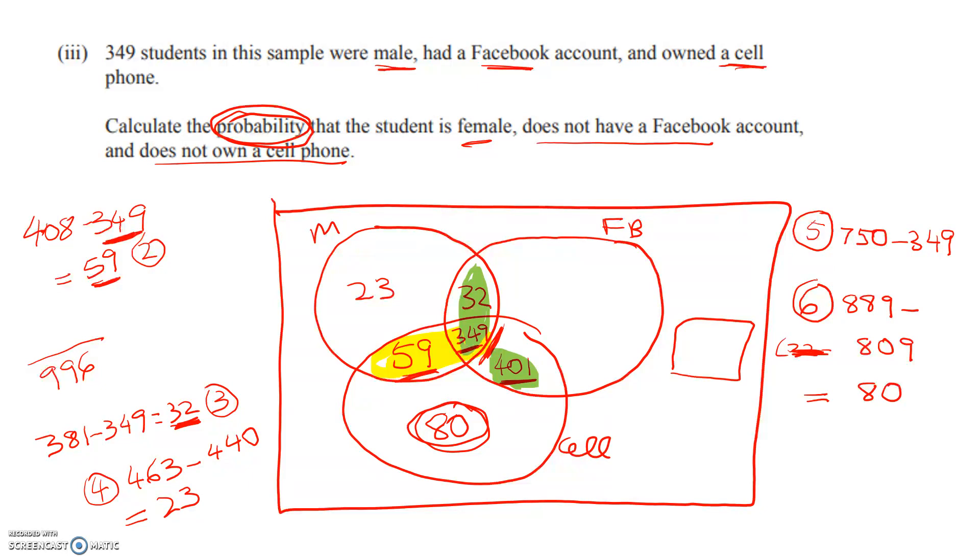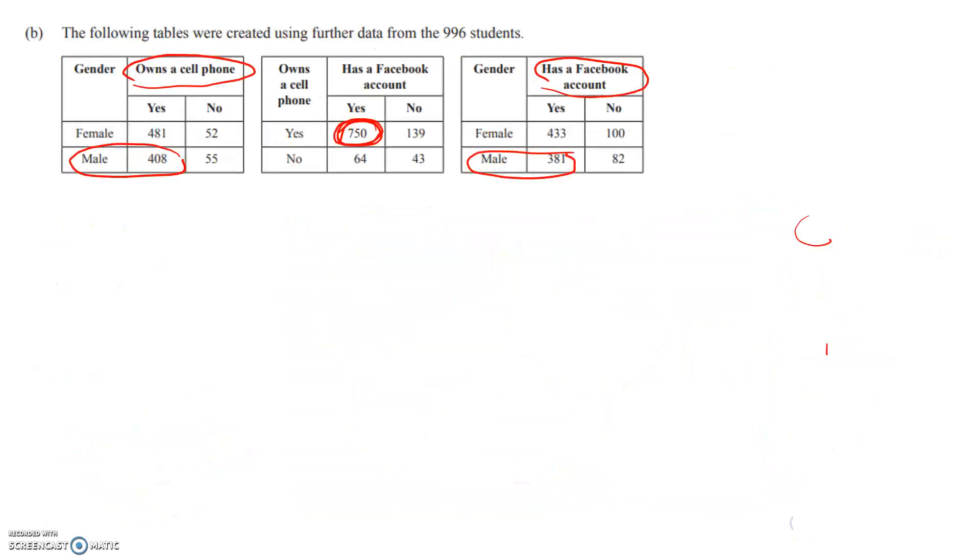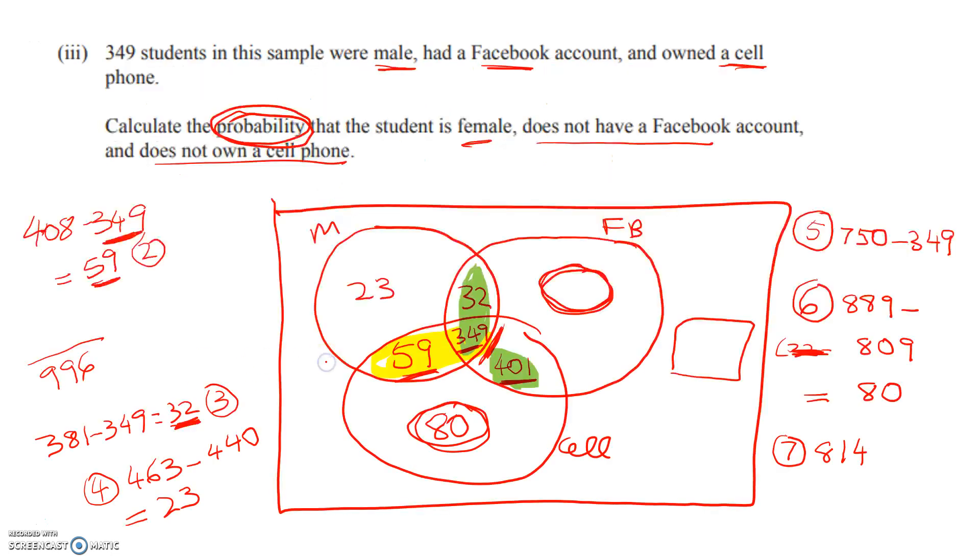The last one that we can get is in here. We can work out how many people have got Facebook but not a cell phone and are female. So Facebook total is 814. It's 814 minus 32 plus 349 plus 401.